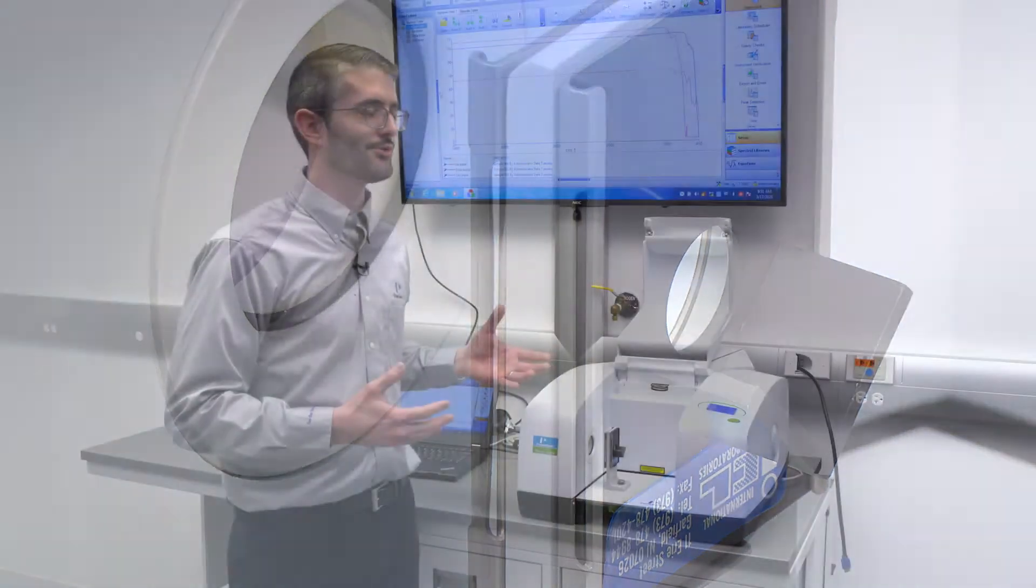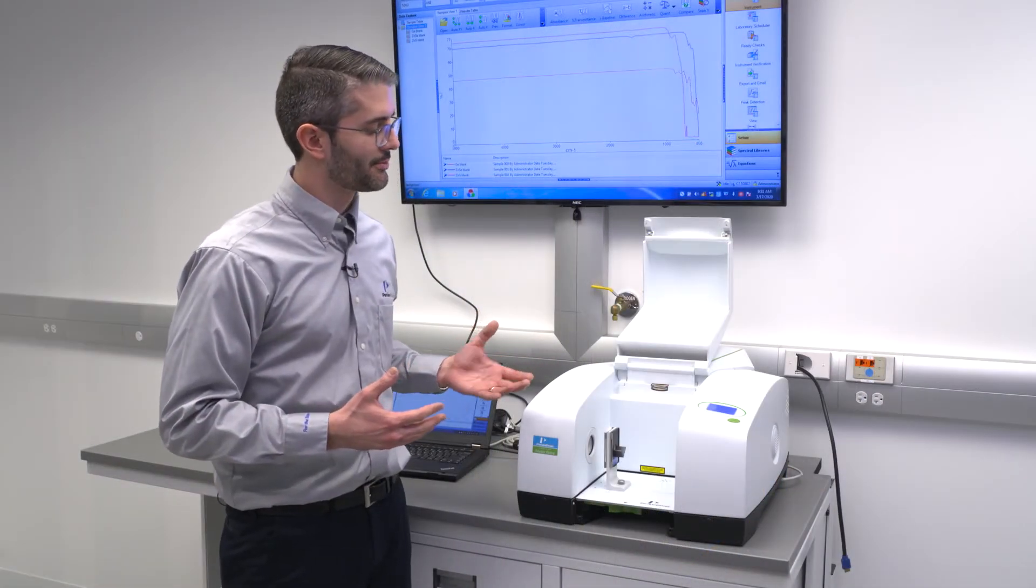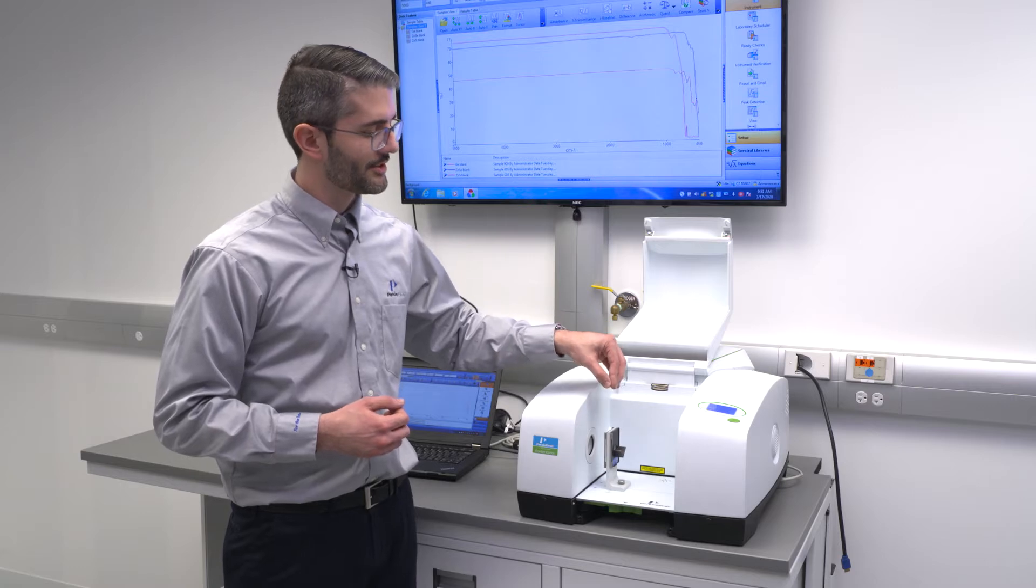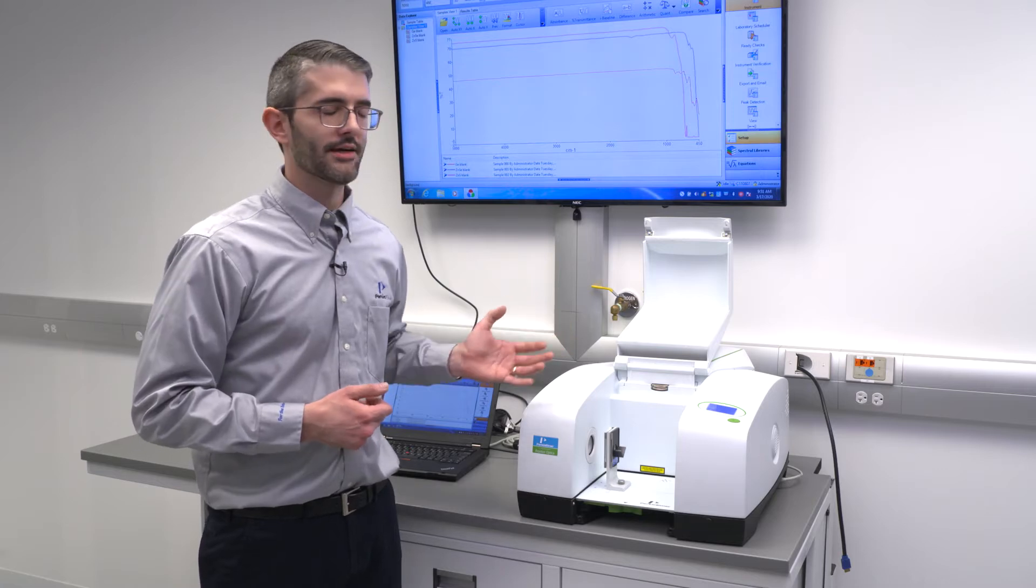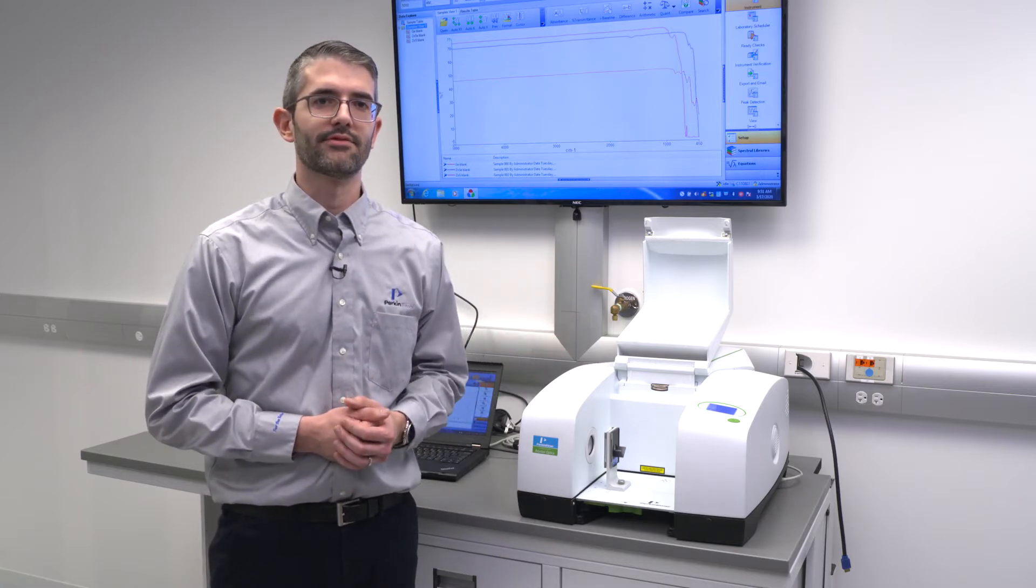In ordinary FTIR systems which do not incorporate these sorts of design benefits, some portion of the incident light on the sample can actually pass back into the interferometer. This causes inaccuracy in measurements and affects the final result.